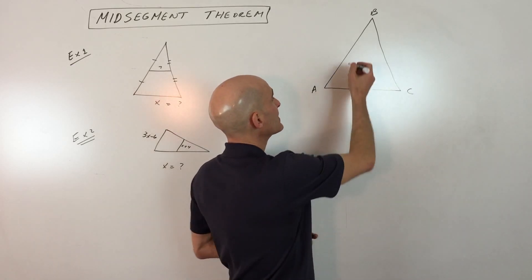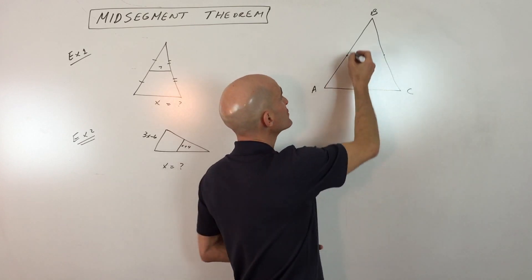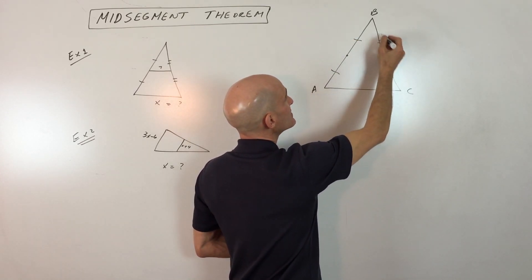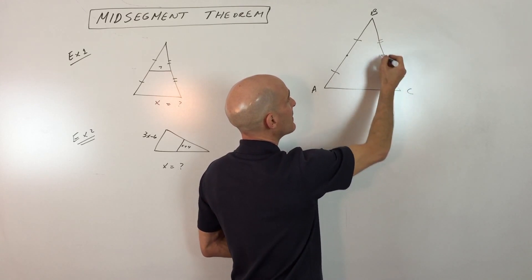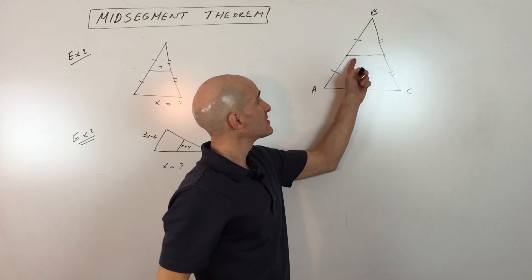A midsegment is basically connecting the midpoints of two sides of the triangle. For example, if this length and this length are the same, that makes this the midpoint. If this segment and this segment are the same, that makes this the midpoint. And if we connect those with a line segment, this is called the midsegment.